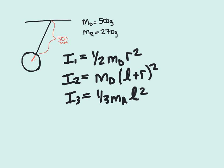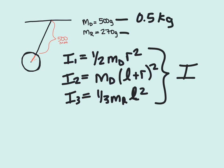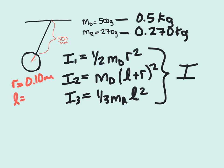We want to change our units. So 500 grams is 0.5 kilograms, and 270 grams is 0.270 kilograms. We also convert our distances: the radius equals 0.10 meters, and the length of our rod equals 0.500 meters.